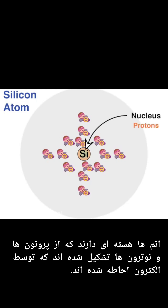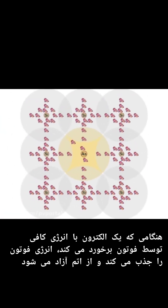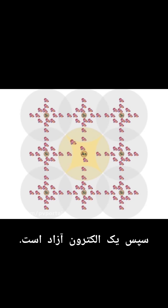Atoms have a nucleus made of protons and neutrons surrounded by electrons. When an electron is hit by a photon with sufficient energy, it absorbs the energy from the photon and breaks free from the atom. It is then a free electron.